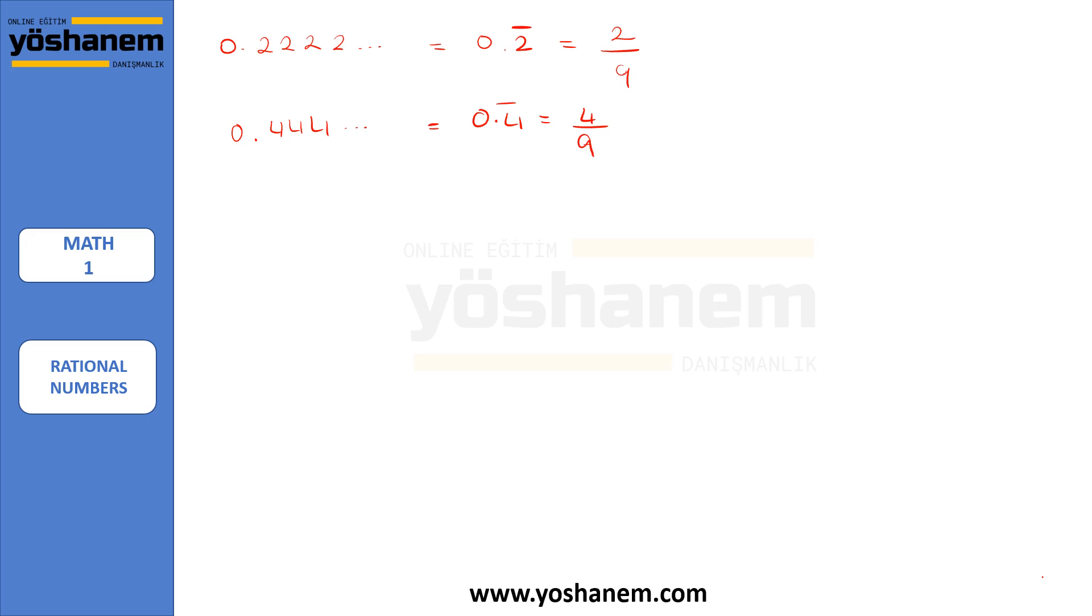Now instead of having one digit repeating, what if we have two digits that repeat? For example, 0.19, 19, 19 and so on. This is equal to 0.19 repeating and this is simply 19 over 99.